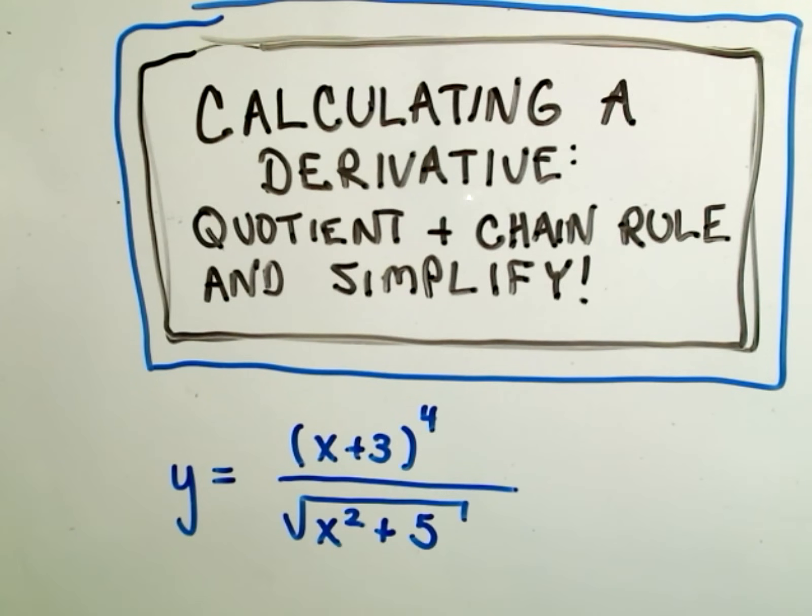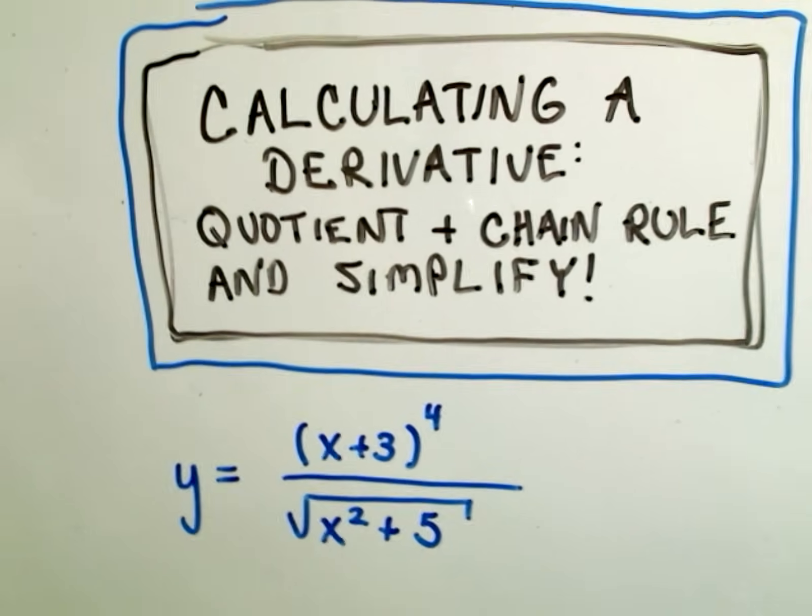Okay, in this video I'm just going to do a derivative with the quotient and chain rule, and then just simplify it down. So we've got y equals the quantity x plus 3 to the 4th over the square root of x squared plus 5.